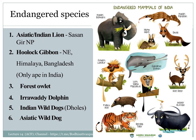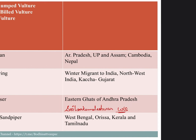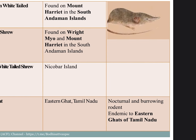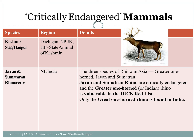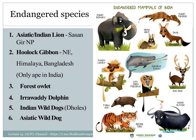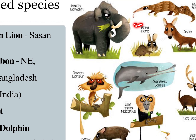Now we have amphibians and fishes. We have critically endangered species. We have birds, amphibians, and fish covered. Moving to critically endangered mammals — two species. Now let's discuss the endangered category. Indian Bengal tiger is also an endangered species.